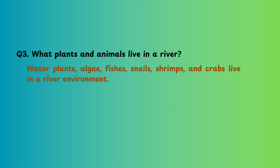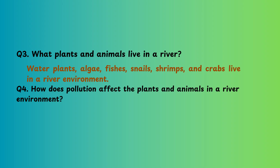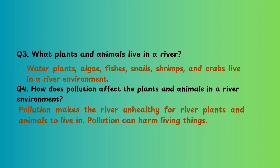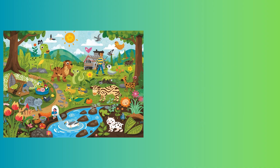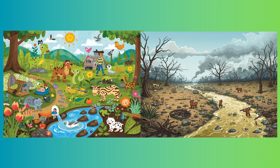Question three: What plants and animals live in the river? Water plants, algae, fishes, snails, shrimps, and crabs live in a river environment. How does pollution affect the plants and animals in the river environment? Pollution makes the river unhealthy for river plants and animals to live in — pollution can harm living things. Living things get their basic needs like food, water, and shelter from the environment; pollution harms the environment, making it harder for living things to meet their basic needs.